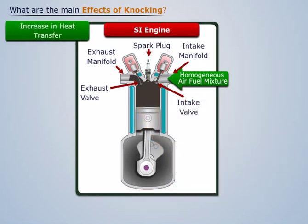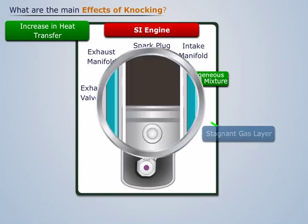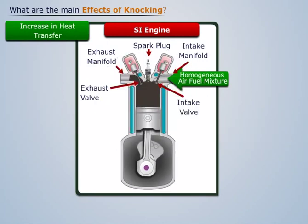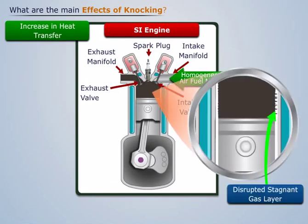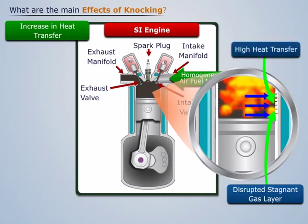To decrease the heat transfer to the cylinder walls, a protective layer of inert stagnant gas is provided on the cylinder walls. Due to high pressure waves hitting the wall, this layer gets removed and the cylinder walls come in direct contact with the flame.